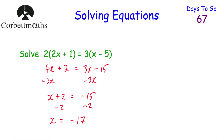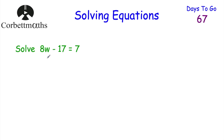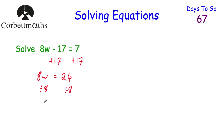We've looked at some equations, starting with straightforward ones and progressing to those with letters on both sides, brackets, and more. Here are some more questions for you to try — feel free to pause and solve these equations, then we'll go through them. First equation: 8w subtract 17 equals 7. Add 17 to both sides to get 8w equals 24. Then divide by 8: w equals 3. Well done.